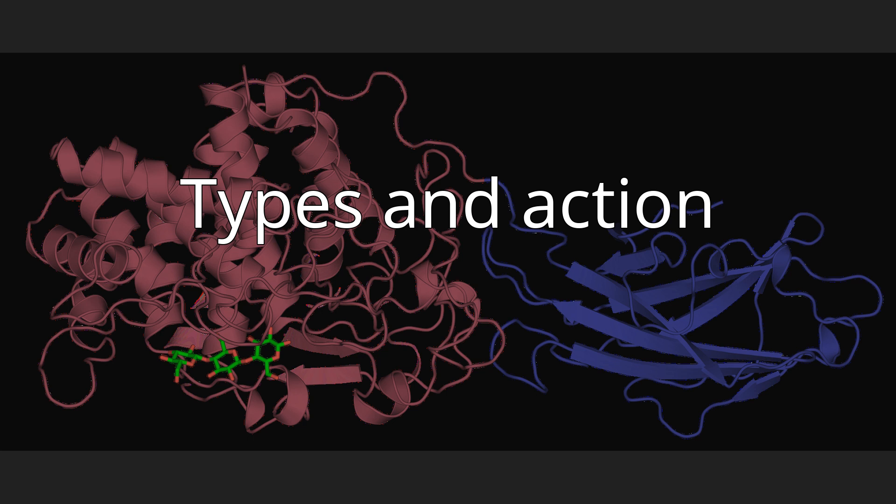Cellobiases (EC 3.2.1.21) or beta-glucosidases hydrolyze the exocellulase product into individual monosaccharides. Oxidative cellulases depolymerize cellulose by radical reactions, as for instance cellobiose dehydrogenase (acceptor). Cellulose phosphorylases depolymerize cellulose using phosphates instead of water.